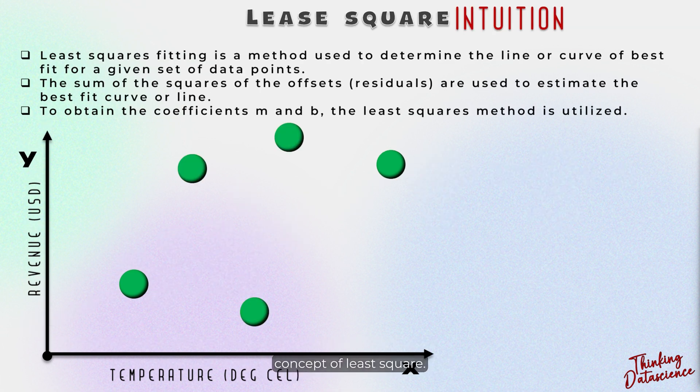So let us delve into the concept of least square. Imagine we have the same set of data points from the ice cream cart with temperature on the x-axis and revenue on the y-axis.